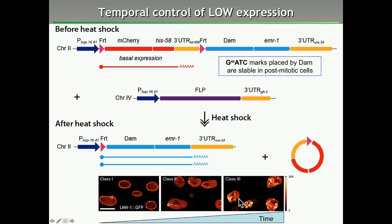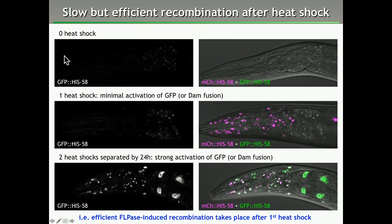This approach works as follows: without any heat shock we have no expression of the GFP-histone. After one heat shock we get strong activation of the mCherry-histone as expected, and we start getting weak expression of the GFP-histone. After a second heat shock we get strong expression of the GFP-histone. This tells us we do get sufficient activation of the flipase after one heat shock to initiate the recombination we need to place our DAM fusion genes after the heat shock promoter, without over-activating and inducing very high expression of the DAM fusion.